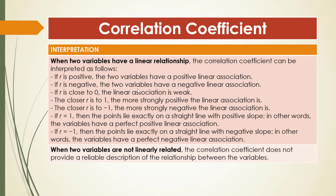If r is exactly 1, then the points lie exactly on a straight line with positive slope — in other words, the variables have a perfect positive linear association. If r is equal to negative 1, then the points lie exactly on a straight line with negative slope — the variables have a perfect negative linear association. However, these last two cases are rare; we don't see perfect relationships in practice much. When two variables are not linearly related, the correlation coefficient does not provide a reliable description of the relationship between the variables.